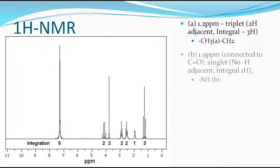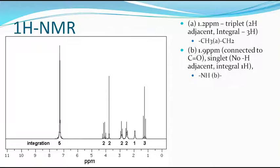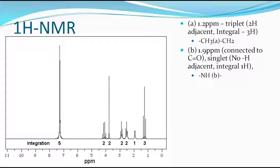The second group is at 1.9 PPM. It may be connected to a carbonyl group or it may be an NH group. It is a little deshielded. Since we have already seen NH stretching in the IR, and it appears as a singlet integral of 1, we consider this must be an NH group.